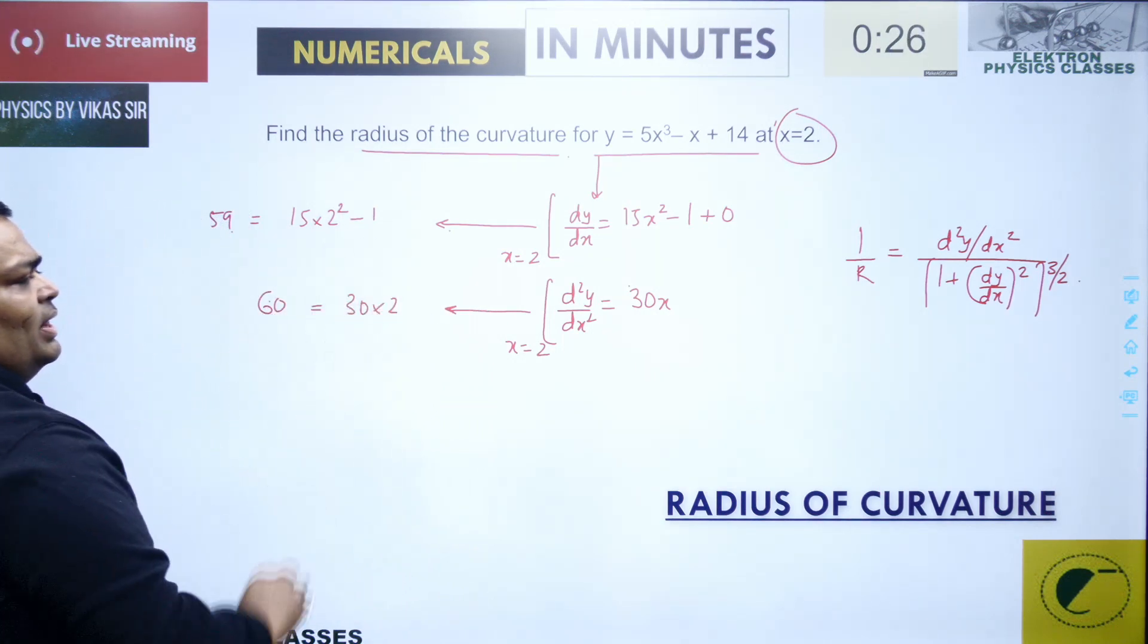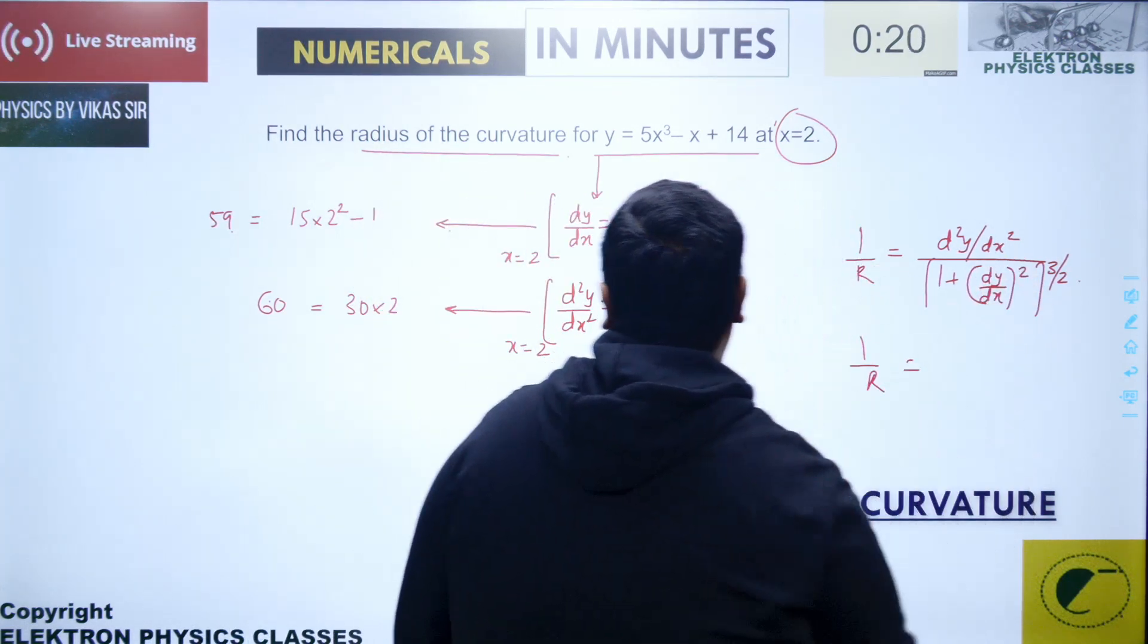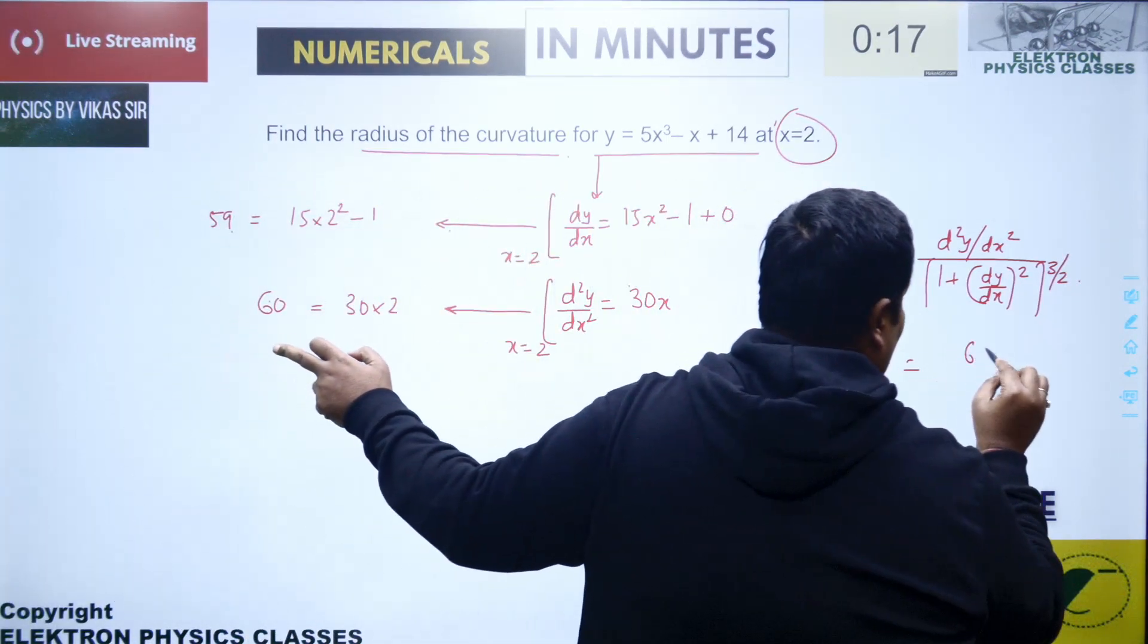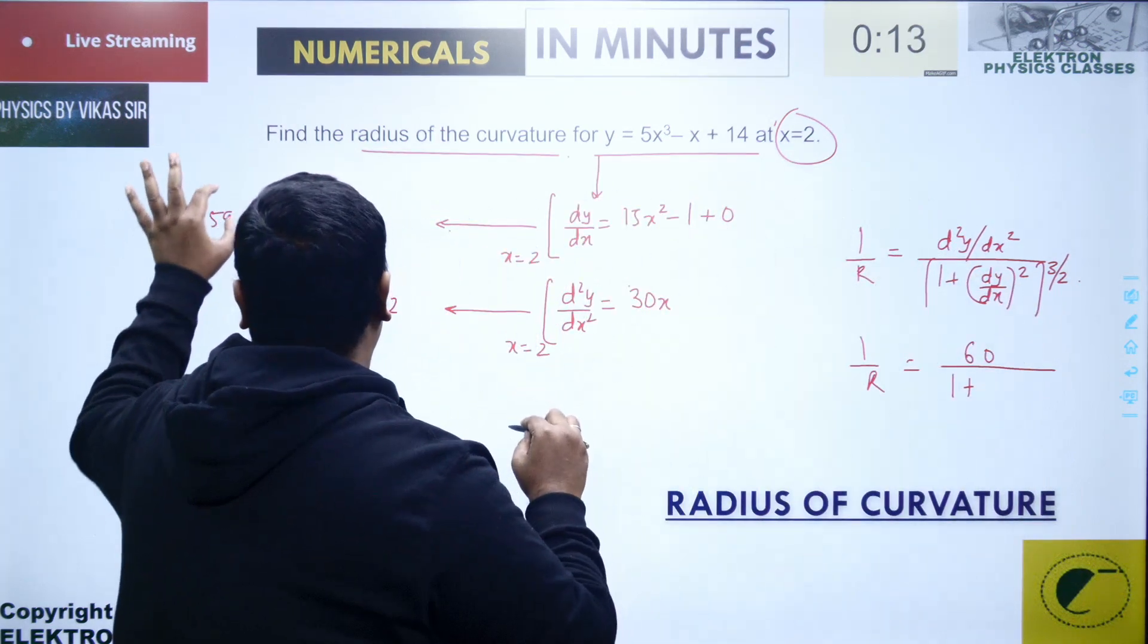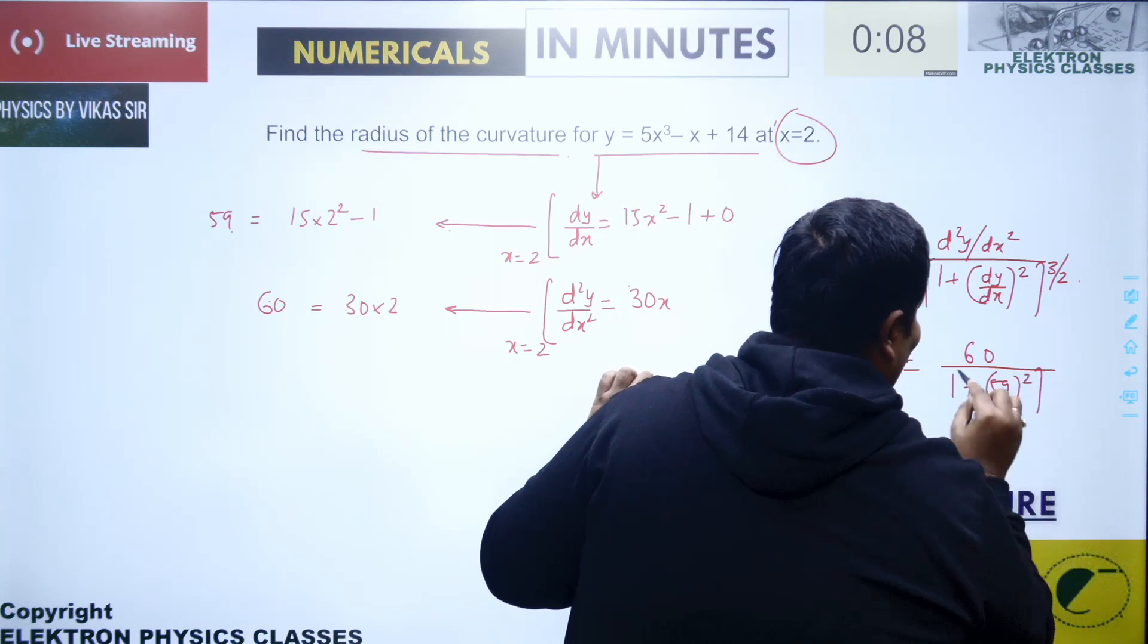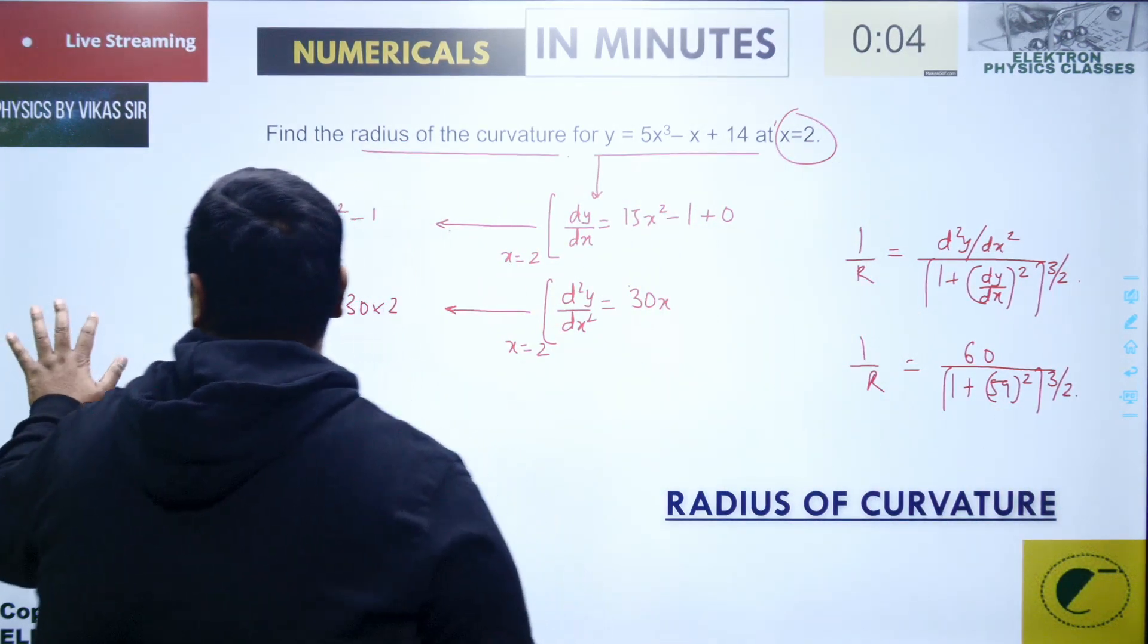Now I have both the values, so I substitute in this expression where I have 1 upon r equals d square y upon dx square, the value is 60, divided by 1 plus dy upon dx whole square, the value is 59 at x equal to 2. So 1 plus 59 square raised to the power 3 by 2.